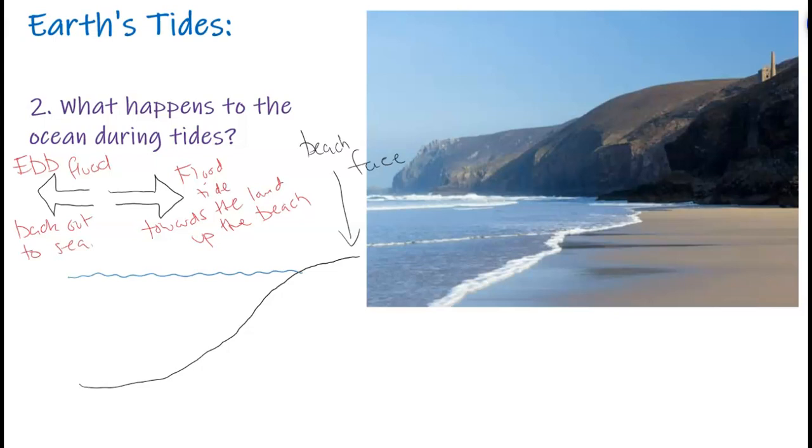Again, this happens over a certain time, a certain cycle, and a certain pattern, which we'll get onto in a different video. So the ocean's going to move, and the amount of movement is called the tidal range.